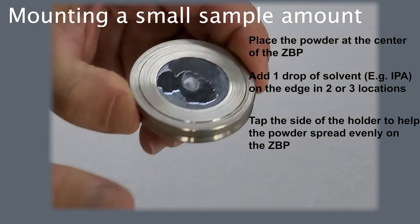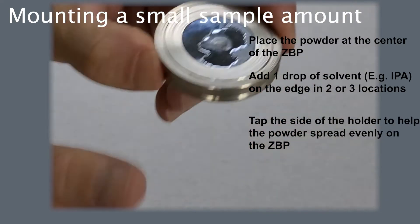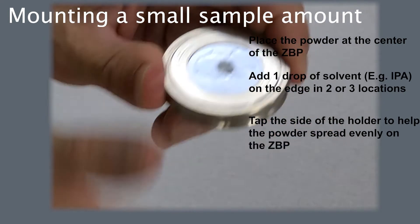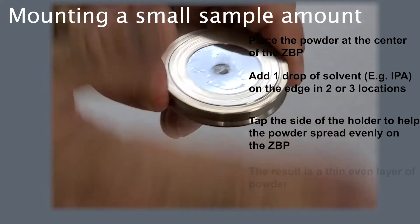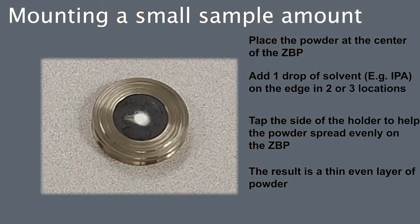Tap the side of the holder, rotating the holder, to get an even spread of the sample. The result should be a very thin layer of powder sample.